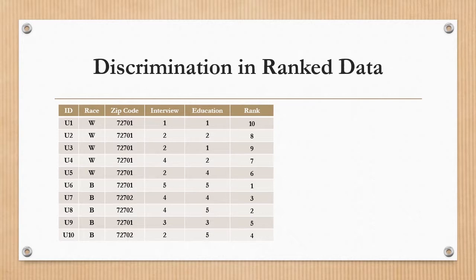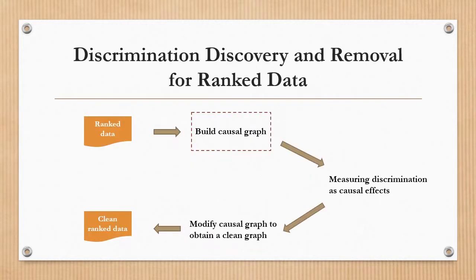When we come to the ranked data, the challenge is that causal graphs cannot be directly built from the ranked data since ranking is a permutation of series of unique calculating integers, not random variables. In this work, we study the discrimination discovery and removal for ranked data using the causal graph.